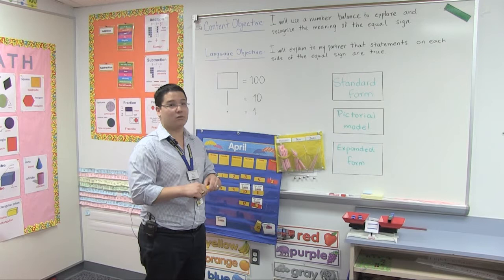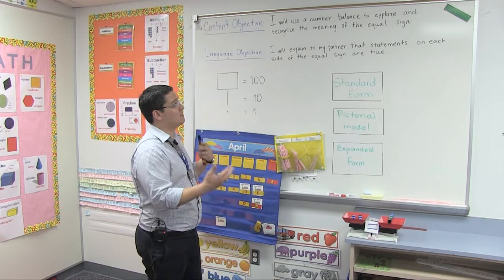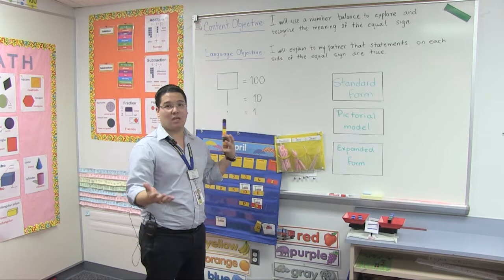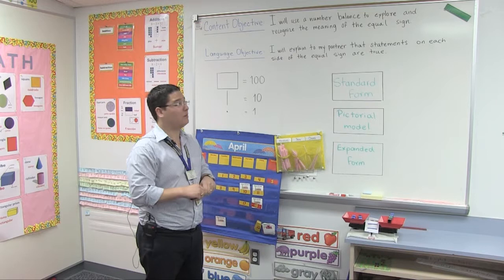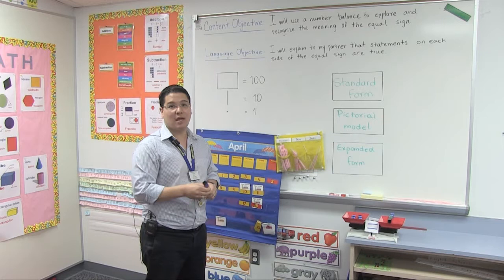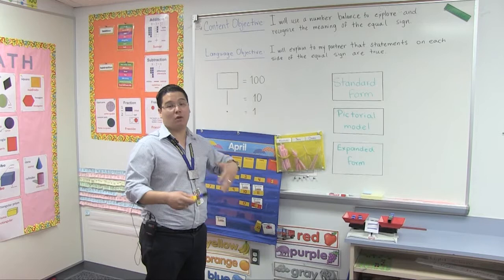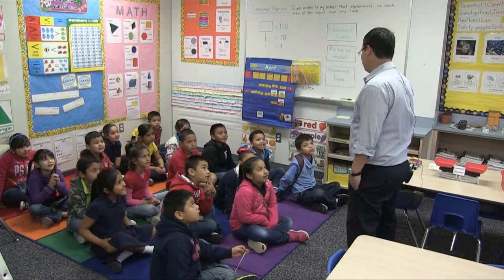Also, since they are bilingual kids, I'm trying to help them improve their language skills. So we also have a language objective: I will explain to my partner that statements on each side of the equal sign are true. They will have time to discuss during the centers if a number sentence is equal or not, and why — obviously proving and using the number balance. I'm putting that language objective because they are developing communication skills. Most of them speak Spanish but they are trying to speak in English using complete sentences, improving not only their math knowledge but also their communication skills.